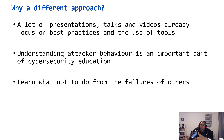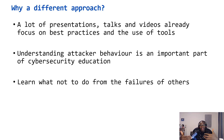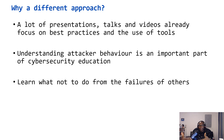It's also important to learn what not to do from looking at the failures of others. There's been a lot of discussion around the SolarWinds breach — people are trying to learn how it happened, how it could have been prevented, and how we stop something like that from happening again. That's part of offensive security education.